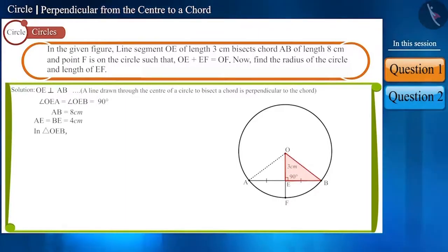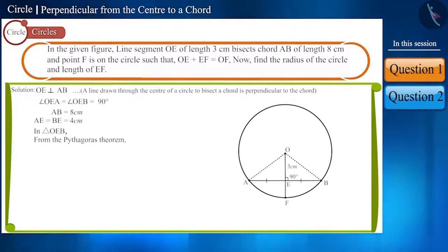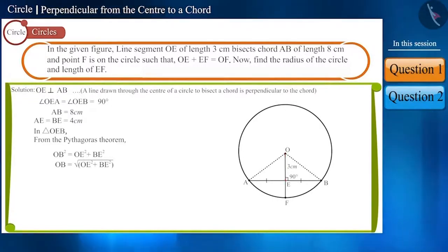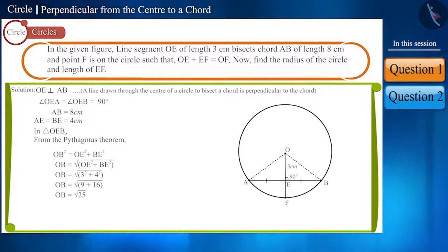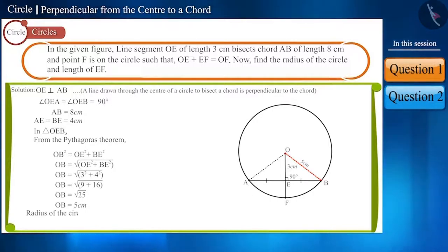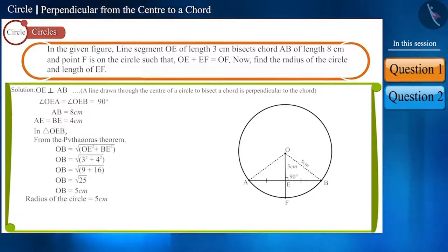Using the Pythagoras theorem in triangle OEB, we can write it in this way. We know the lengths of OE and BE. On simplifying it, we get the length of OB as 5 cm. In this way, we found the radius of the circle.